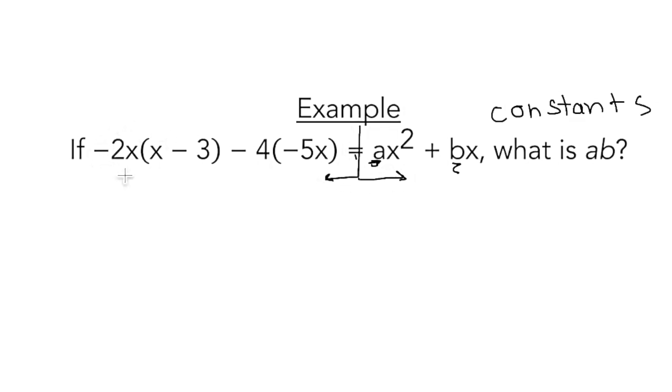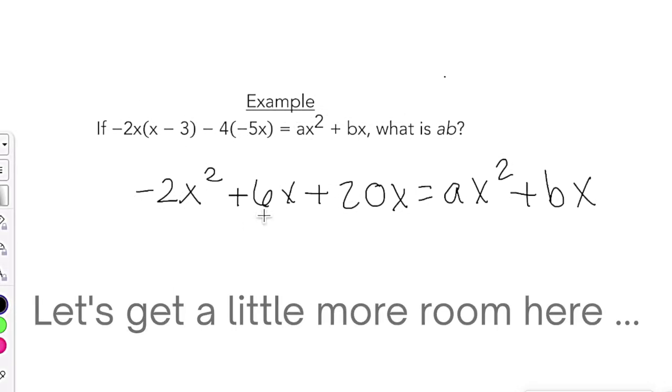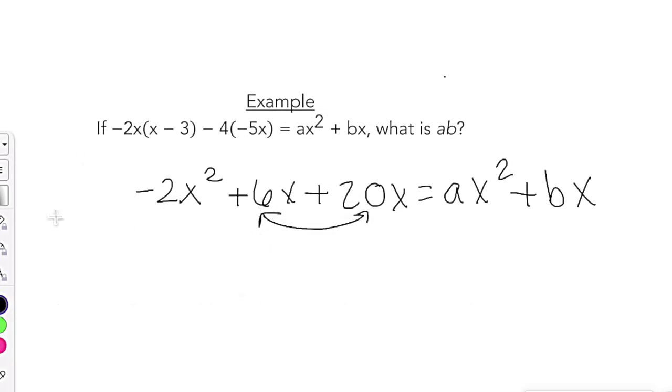So I know that you could probably do this distribution in your head, but don't. It's not worth it. Take it one step at a time and make sure you really are careful because we're dealing with four negative signs here. So our signs are going to change a little bit. So if we distribute, we've got negative 2x times x is x squared plus 6x plus 20x equals ax squared plus bx.